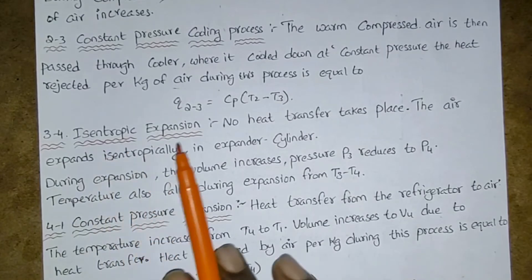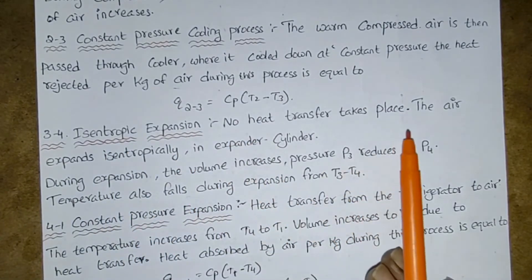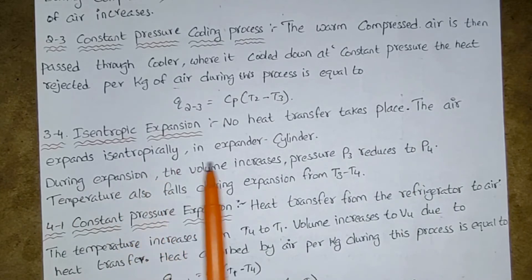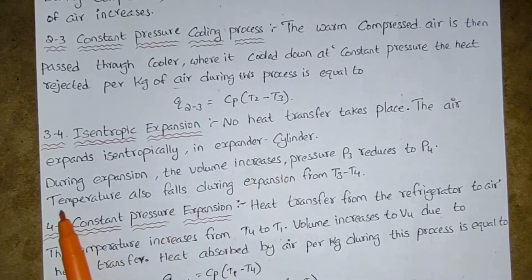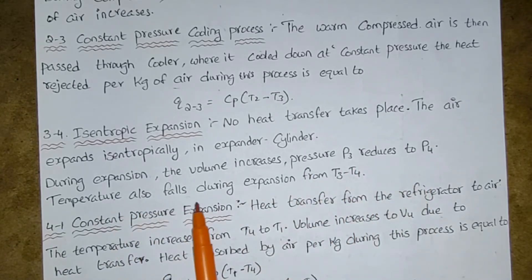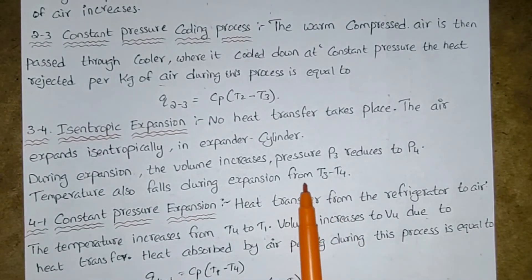Process 3 to 4 — isentropic expansion. No heat transfer takes place. The air expands isentropically in the expander cylinder. During expansion, the volume increases, pressure P3 reduces to P4, and the temperature also falls during expansion from T3 to T4.